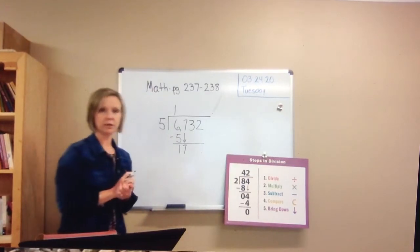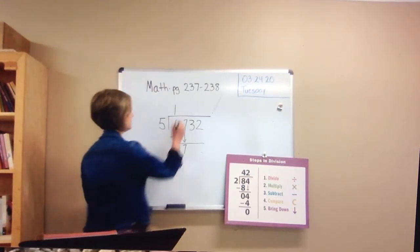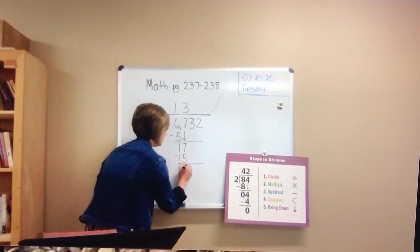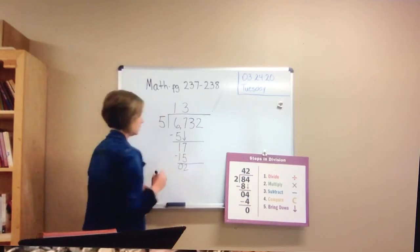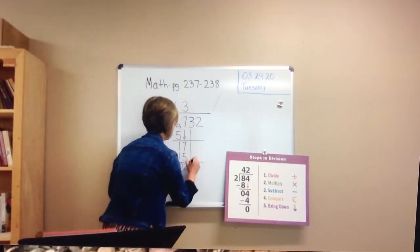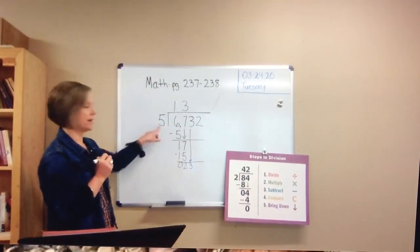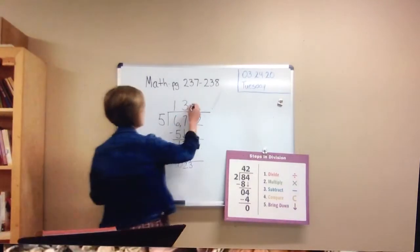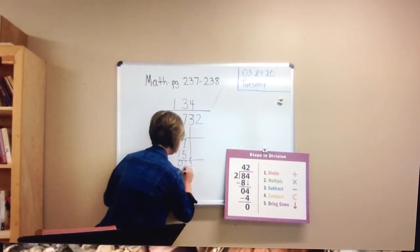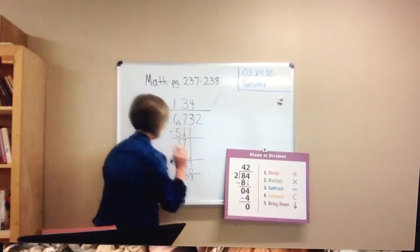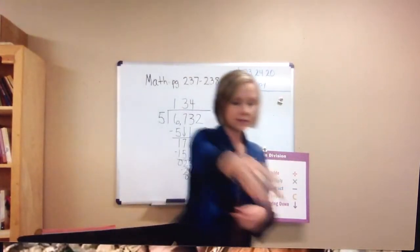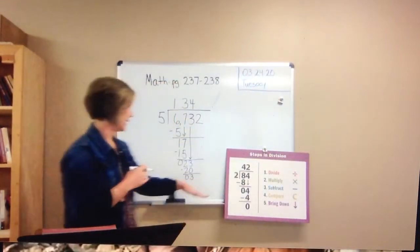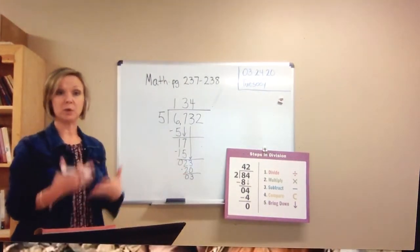17 divided by five. We start all over again. How close can we get without going over? Correct, three. Three times five would be 15. Then we subtract: seven minus five equals two. If you want to put the zero for a placeholder, that's fine with me. Two is smaller than five, so we bring down the three. Now we have 23 divided by five. How close can we get without going over? Four. Four times five would be 20. We have three and then a zero. This is where we would normally stop with our remainder and say we have a three, three is smaller than five, and we would have a remainder and check.